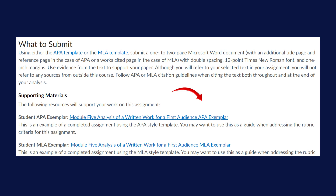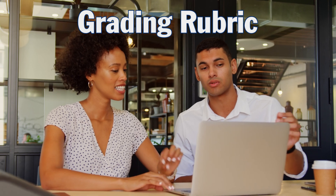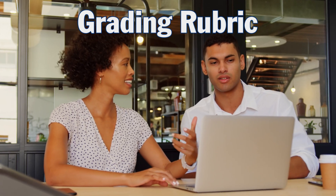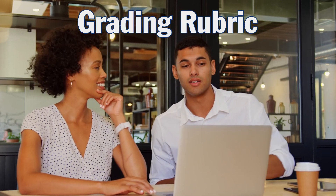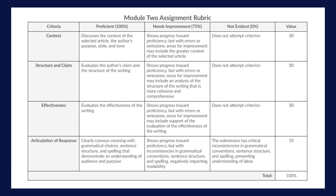Finally, your assignment guidelines should have a grading rubric. This chart usually has the criteria that will be assessed in your submission as well as proficiency categories, which your instructor uses to determine what percentage of achievement you've reached. Proficiency categories typically include exemplary, proficient, needs improvement, and not evident, but this is something that changes from assignment to assignment.